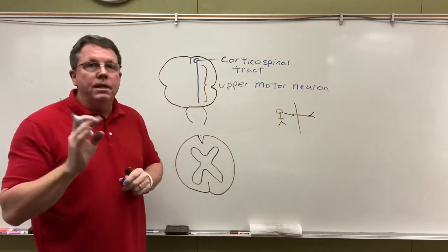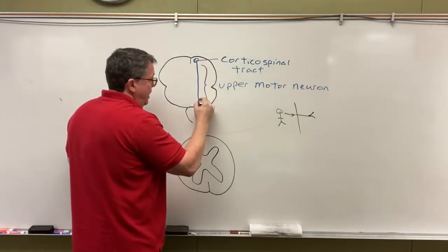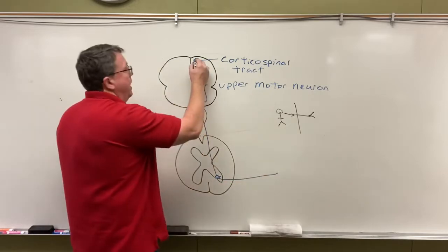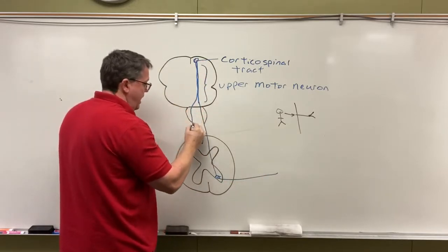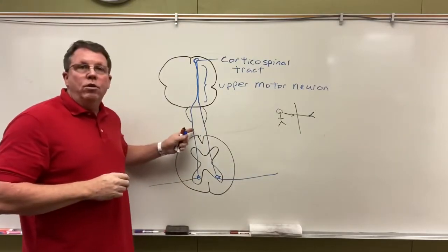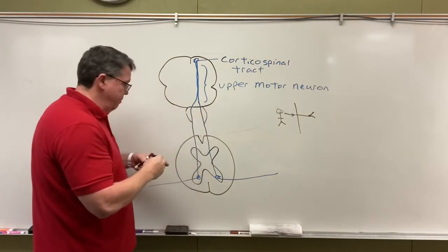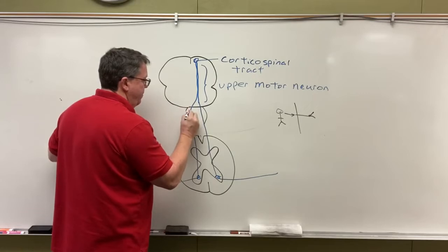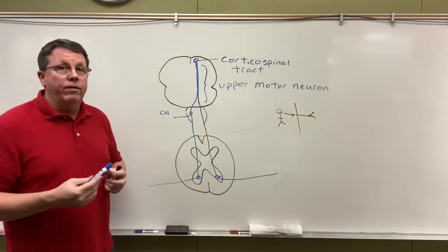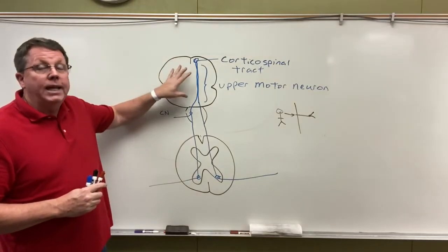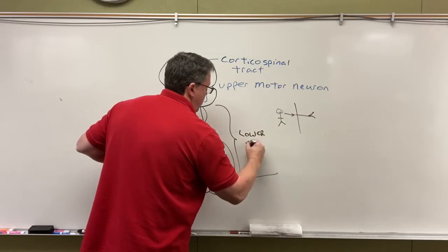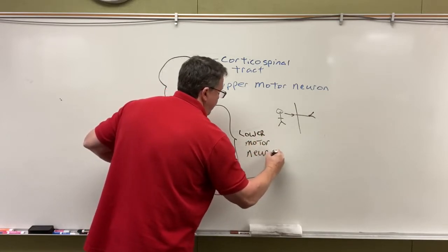As the corticospinal tract comes down, it can either go straight down to the spinal cord and out to the body, or it can cross over to the other side and go out to the body. In the brainstem, it can also meet with cranial nerves. In ALS, when you have an upper motor neuron lesion — meaning damage — you get different symptoms than with a lower motor neuron lesion.